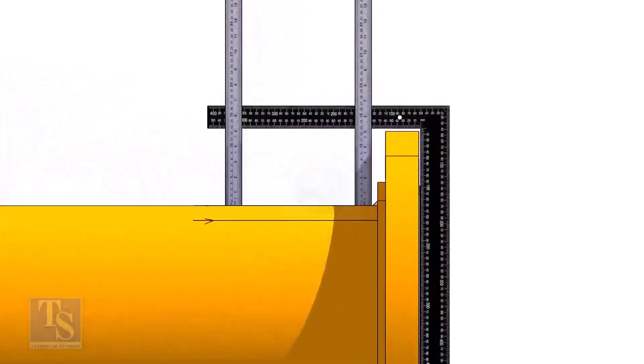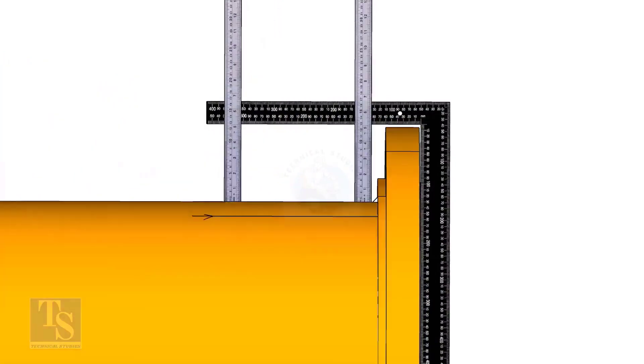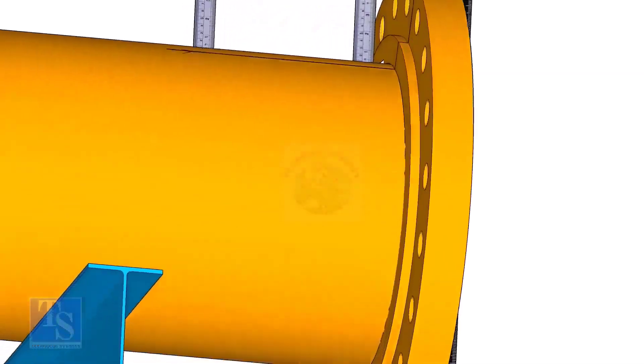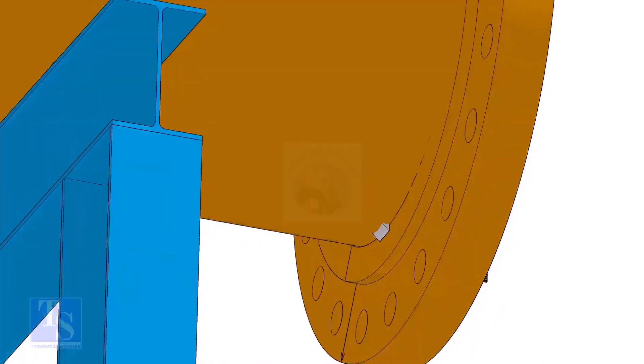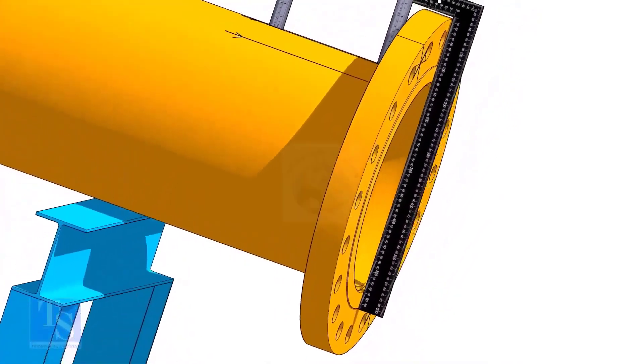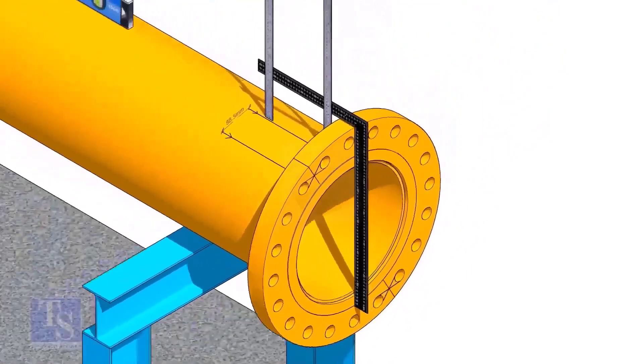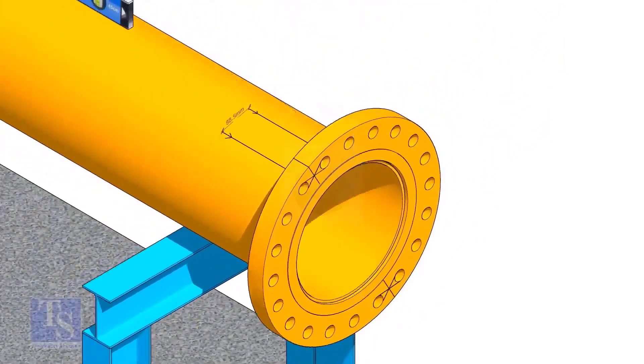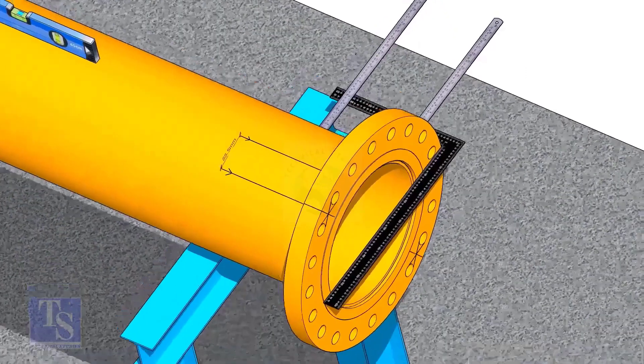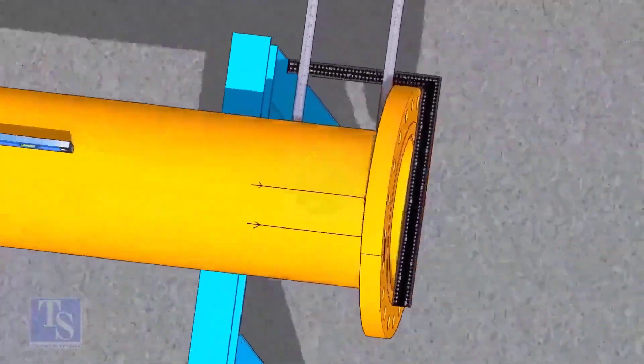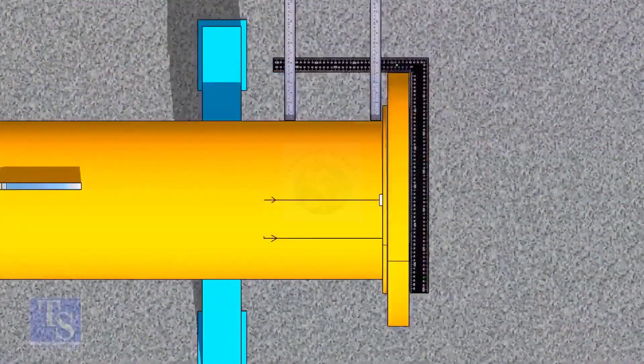Tack weld on the top of the pipe with the flange and check the squareness. If correct, tack weld at the bottom side also. Now, maintain the squareness of the opposite side and tack weld on both sides.